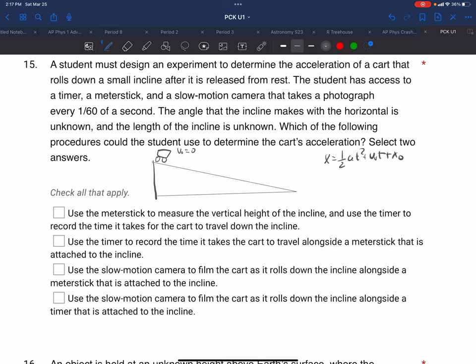And that would be x. If it's released from rest, this term drops out. And if we make this zero and this the final position, that drops out. So we're left with x equals one half a t squared. So if we had the length and we measured the time, we could calculate the acceleration.